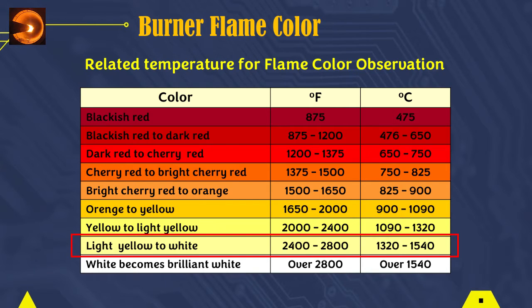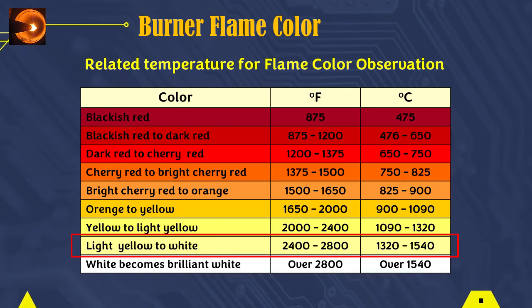Then, the color of the fire progresses to brilliant white at a temperature of more than 1,540 degrees Celsius. The ideal burner flame color for kiln operation is light yellow to white.